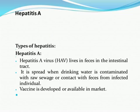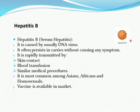Types of hepatitis. Hepatitis A, abbreviated as HAV, lives in feces and in the intestinal tract. It spreads when drinking water is contaminated with sewage or feces from infected individuals. Vaccines are available in the market. Hepatitis B virus, shown in this figure, is formerly known as serum hepatitis because it is transmitted through blood transfusion. It is caused by a DNA virus, often carried without causing any symptoms, and is rapidly transmitted by skin contact, blood transfusion, and medical procedures. It is most common among Asians and Africans. A vaccine is available in the market.